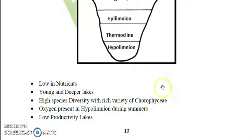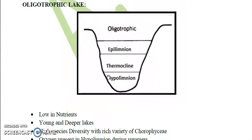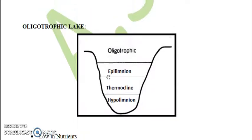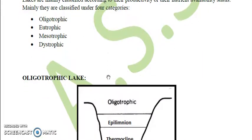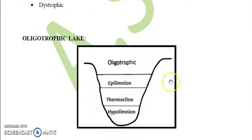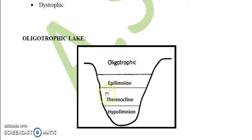Oligotrophic lakes have high species diversity with a rich variety of chlorophytes, meaning green algae. If we draw a diagram of lake stratification — which occurs in both tropical and temperate regions where layers are separated due to non-mixing of water and temperature gradients — the uppermost layer is the epilimnion, the lowermost is the hypolimnion, and the middle layer is the thermocline, which is an intermediate layer with a rapid change in temperature.